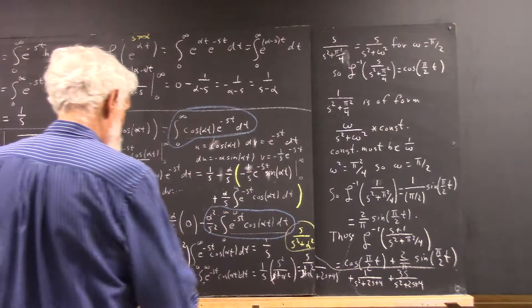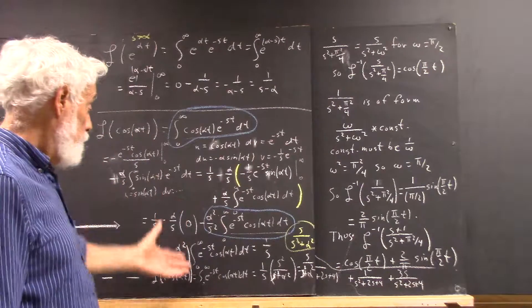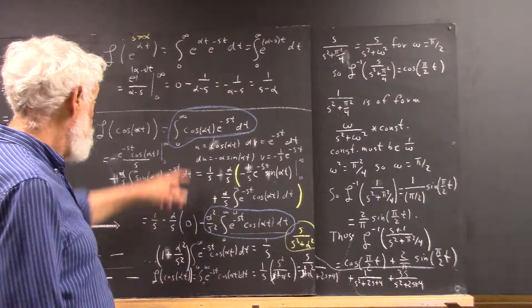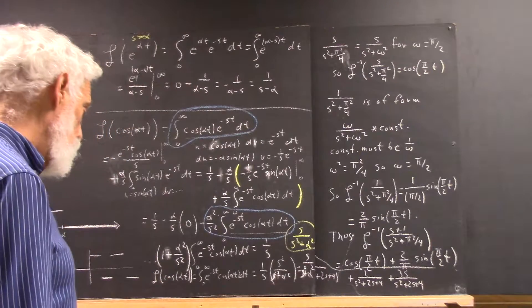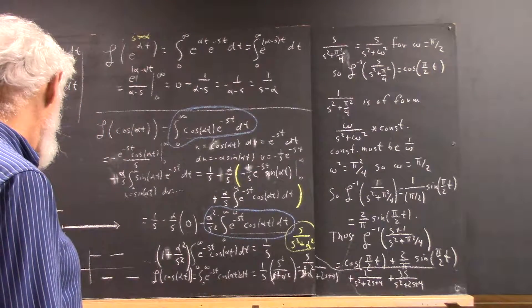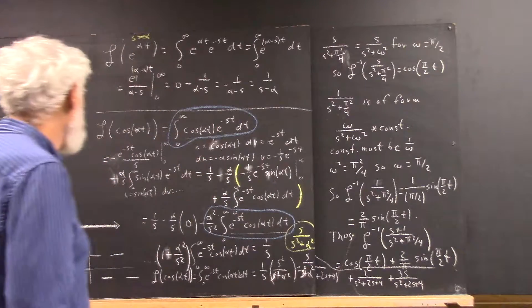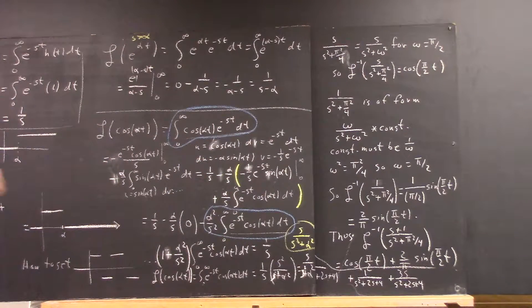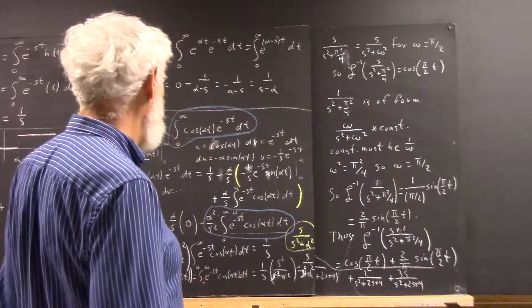And, I see another parenthesis I didn't bother to close. Again, pretty straightforward. Now, you can do the same thing for the sine of alpha t. You get the formula for that. And, you have a table of these formulas in your textbook. So, you have them to refer to. But, this is how they're derived. And, you should be able to derive many of those formulas.